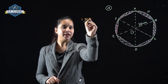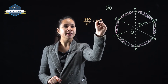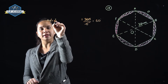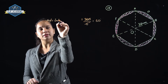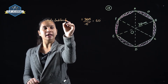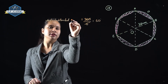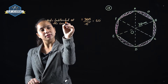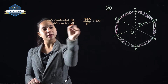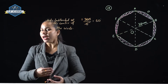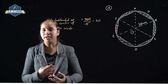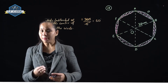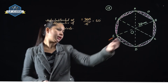So dividing 360 by 6 gives 60°. The angle subtended at the center of the circle by each part is 60°. Now let's talk about triangle OAB — each part makes a 60° angle at the center of the circle.